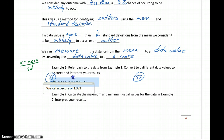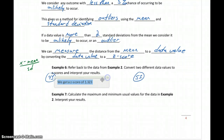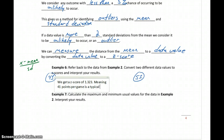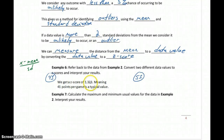So we get a z-score of 1.323, meaning 41 points per game is a typical value — one we would expect to occur. Because a value more than two standard deviations away from the mean is considered unusual, a z-score of 1.323 means this data value is just a little over one standard deviation from the mean. It's within the 95% range, so we consider it a typical value.